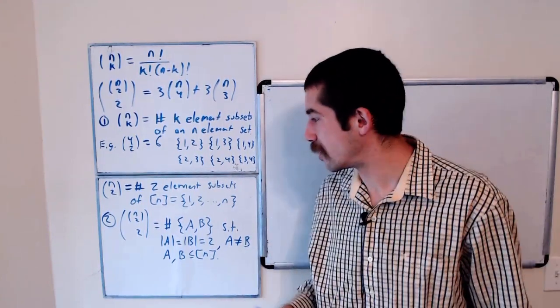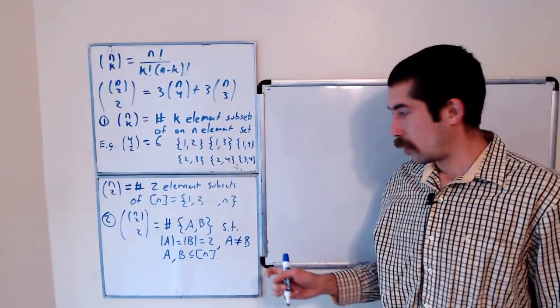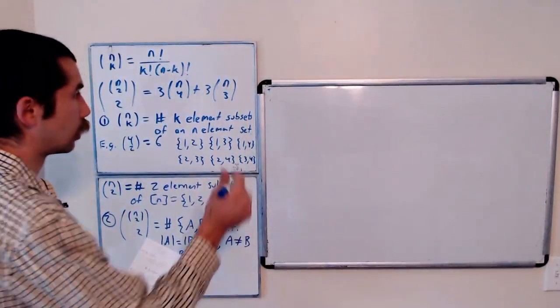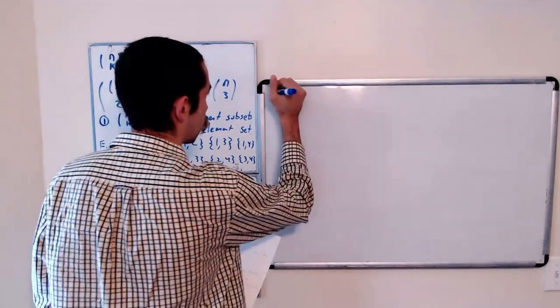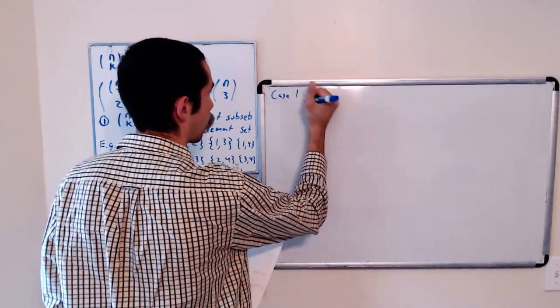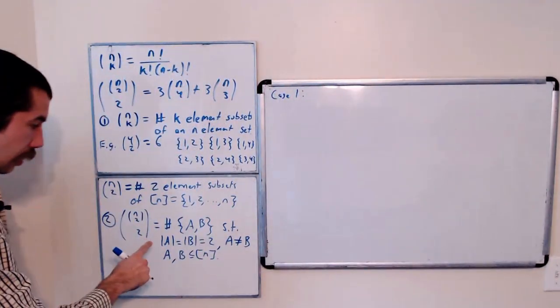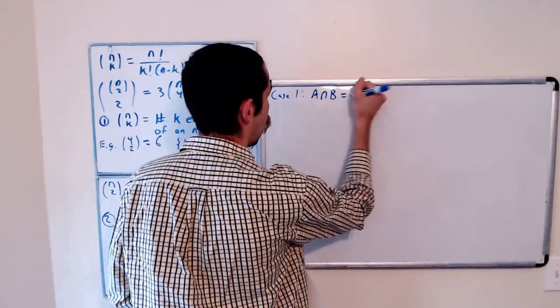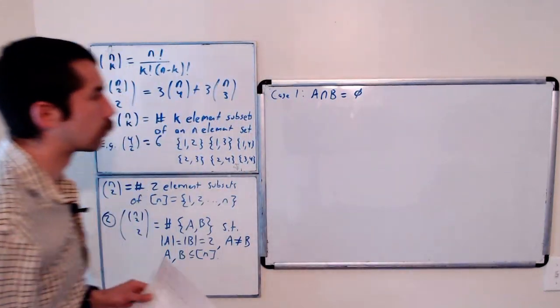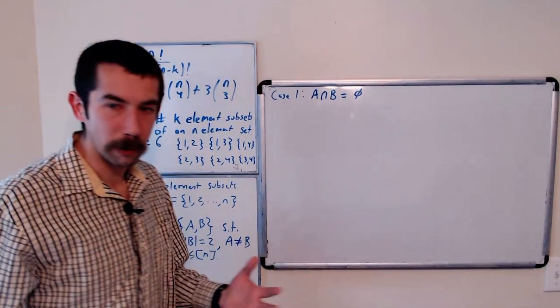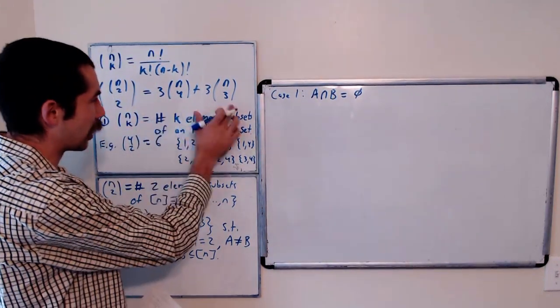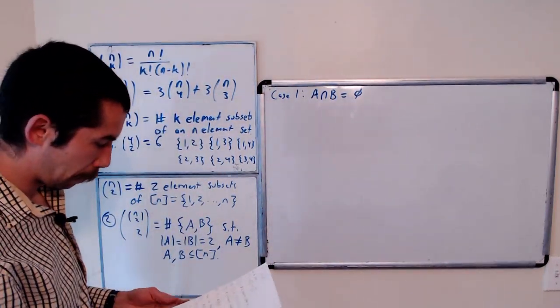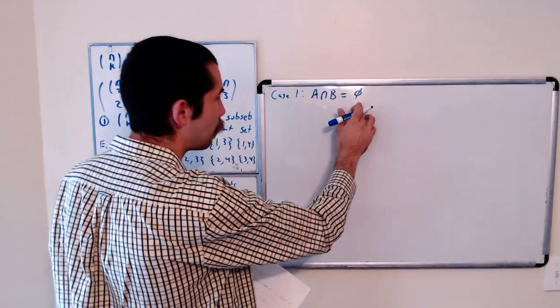All right, so now there's 2 cases we need to consider. It's possible that, this will be our first case. So case 1, a and b are disjoint. So a intersect b is the empty set. And so let's count the number of ways that this is possible. And hopefully when we count it, we get something on this right-hand side of our equation.